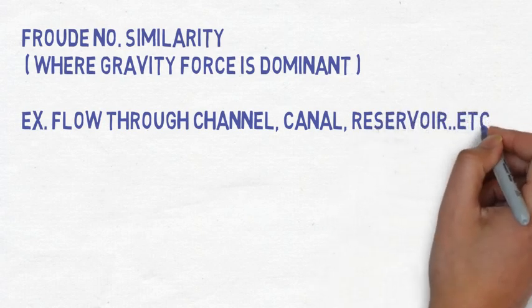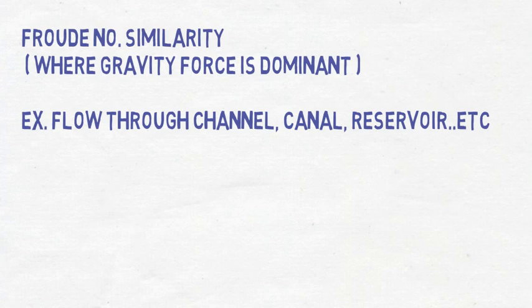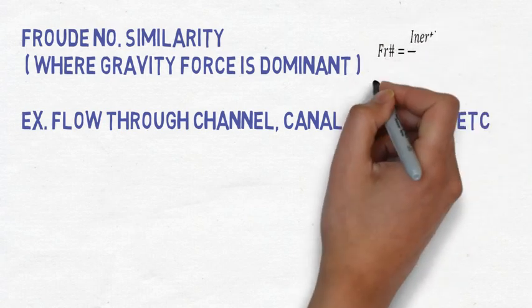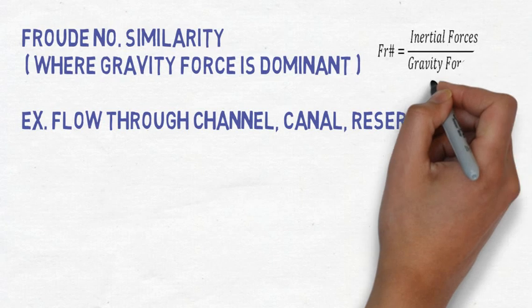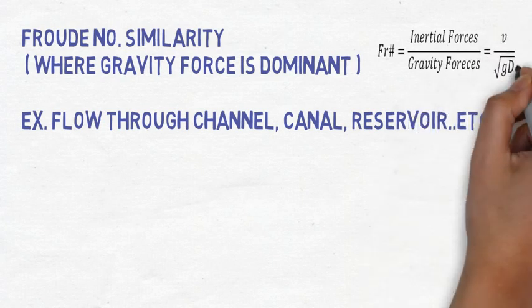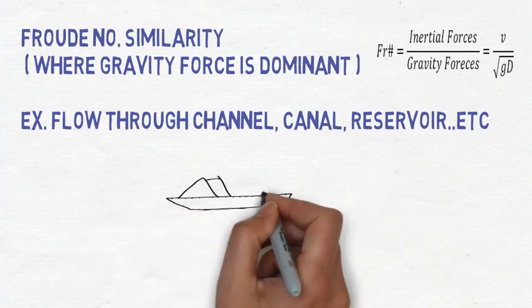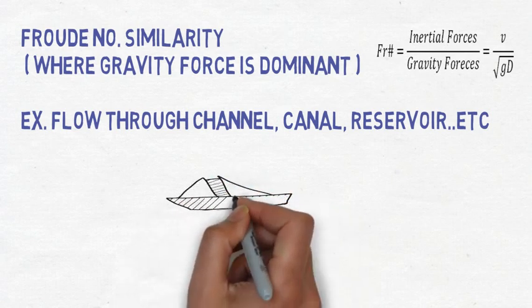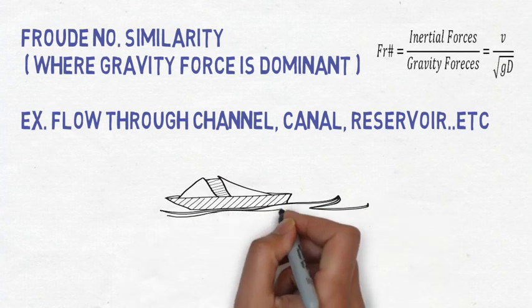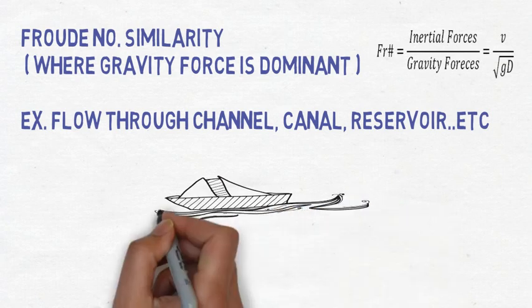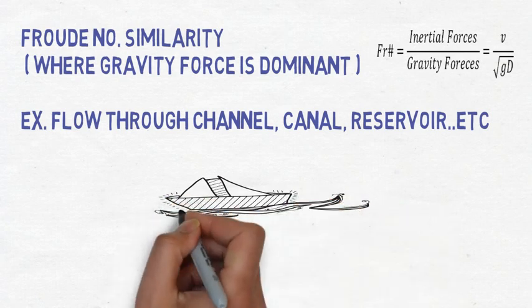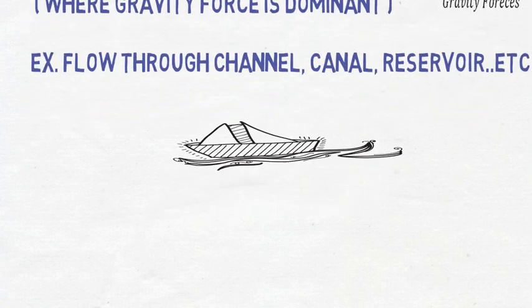So if the flow will be under the action of gravity force, then we can use the Froude number similarity. What is the Froude number? Froude number is nothing but the inertial force divided by gravity force, that is V divided by root over GL. So wherever the gravity force will be dominant, you can apply this similarity to solve the dimensional analysis problem.